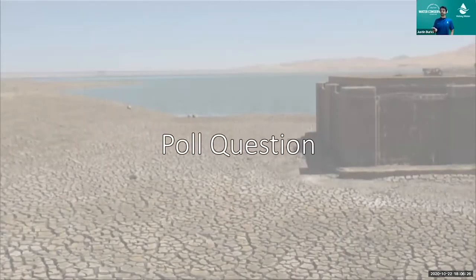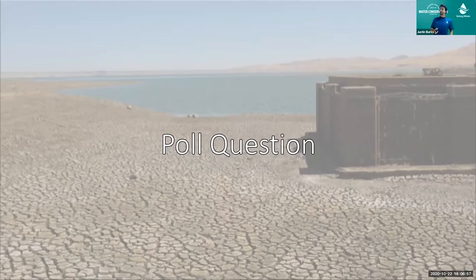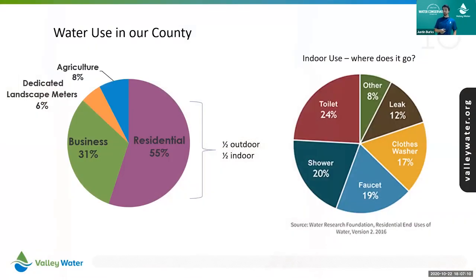Our first poll question: on average, where is most of our drinking water used in Santa Clara County — mostly indoors, mostly outdoors, or is it a 50-50 split? It looks like a strong majority said outdoors. Let's find out — we actually use about 50 percent outdoors and 50 percent indoors. We import about half our water every year from over 100 miles away, and we use half of it outdoors to keep our landscapes green and healthy. Conserving water, installing efficient irrigation, and finding ways to reuse water are all extremely effective ways of making our drinking water supplies more reliable.